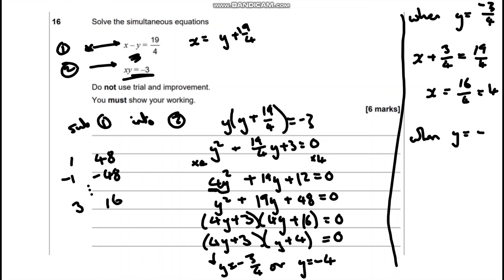When y is negative 4, I think the easiest way to do this is substituting to the second one. So we're going to get negative 4 lots of x equals negative 3. So x is going to be 3 quarters.